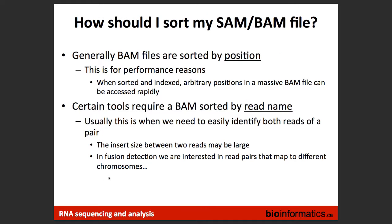When sorting BAM files, you have two options: sort by position or by read ID. If you're retrieving reads based on position, sort by position for faster retrieval. If you need to maintain read pair order — for example, when looking for fusions where pairs map to different chromosomes — sort by read name.